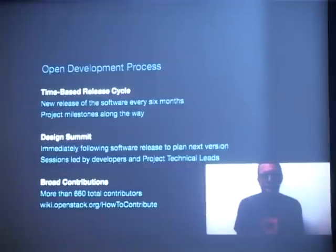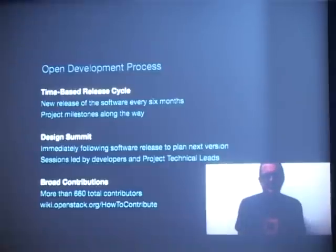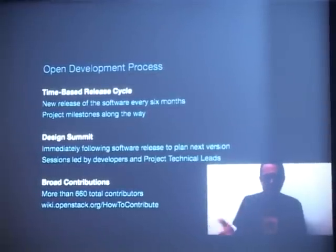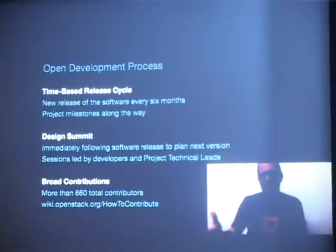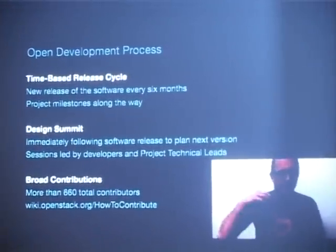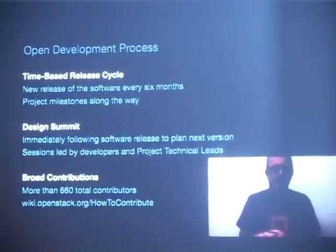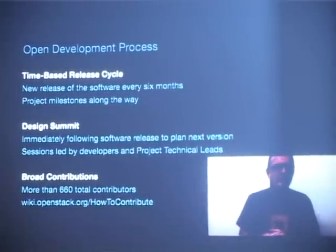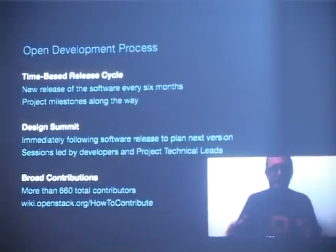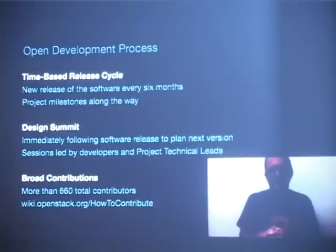The open development process is extremely important to how OpenStack has come so far so fast, and we're very committed to both the process itself and the fact that it's open. We release new software every six months with milestones along the way. As soon as one release is done, we hold a design summit a couple weeks later somewhere in the world, where all the people who've been working over IRC, mailing lists, and phone calls actually get together in person.